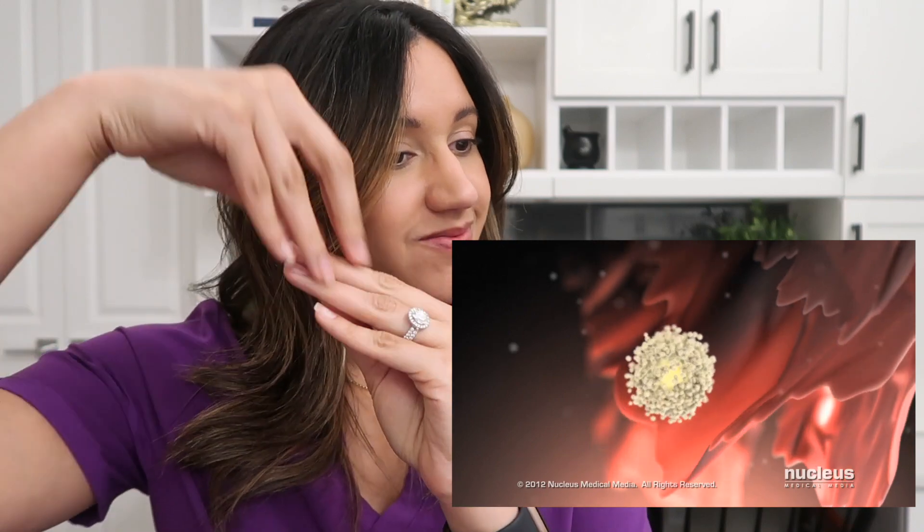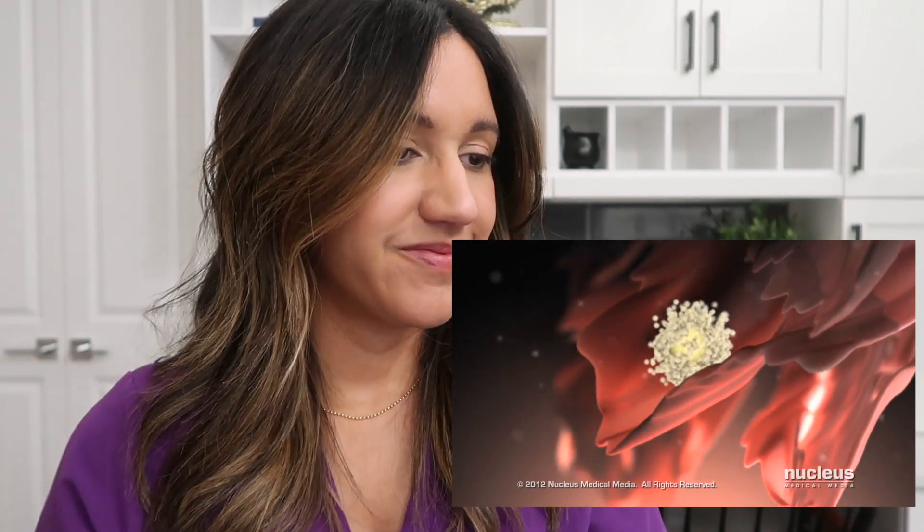The follicle swells until it bursts open, ejecting the egg and fluid from the follicle into the abdominal cavity. In response, the fimbria — tiny projections at the end of the fallopian tube — sweep across the ovulation site and pick up the egg. Microscopic cilia on the fimbria surface transport the egg to the entrance of the fallopian tube. Inside the walls of the fallopian tube, muscular contractions gently push the egg towards the uterus.